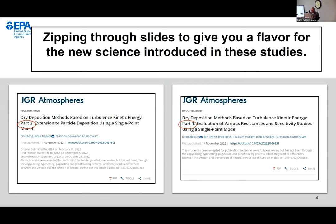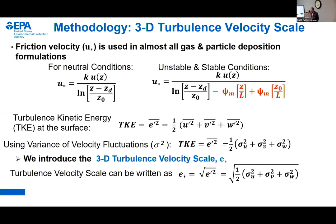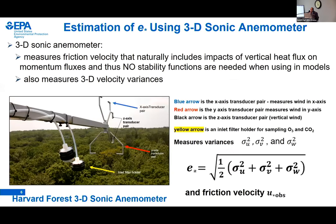In the first part, we get rid of stability correction terms so that one velocity scale is useful for all stability regimes in the boundary layer. We start with TKE, Turbulent Kinetic Energy, equal to E prime squared, equal to half of U prime squared, V prime squared, and W prime squared — the velocity fluctuations. In terms of standard deviations or velocity variances, this can be rewritten as sigma squared for three components. The square root of their sum we call the turbulence velocity scale. At the Harvard Forest site, they have measured for four decades sigma U, sigma V, sigma W, and these can be used to develop a parametrization for E*.